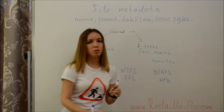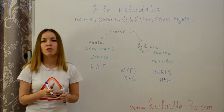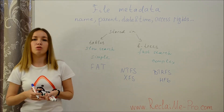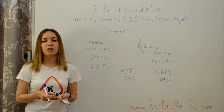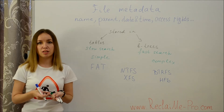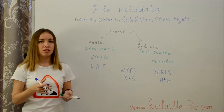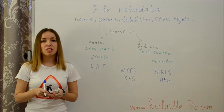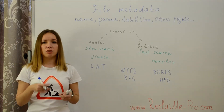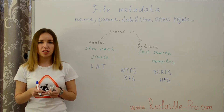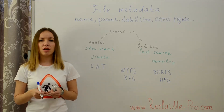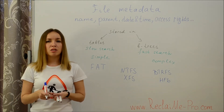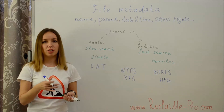BTreeFS and HFS use B-trees and do not use tables at all. In all file systems, there is a record storing metadata, no matter how the search for this record is organized and what pointers to this record exist. If this record is lost, it is impossible to recover the metadata.